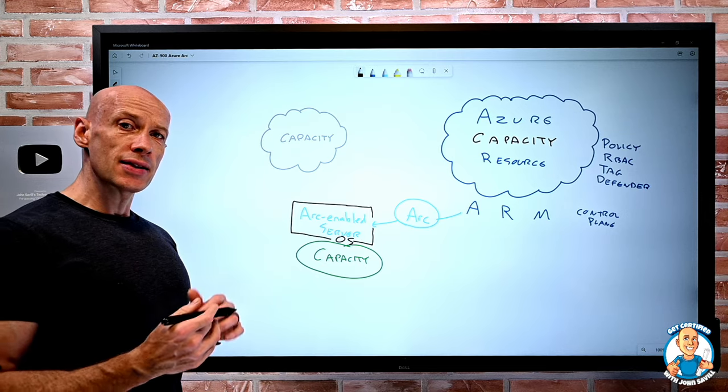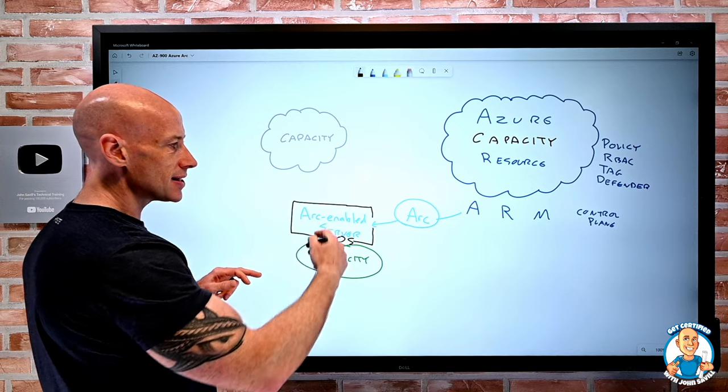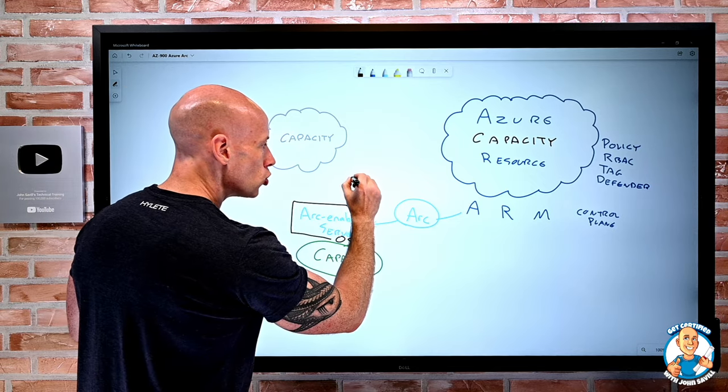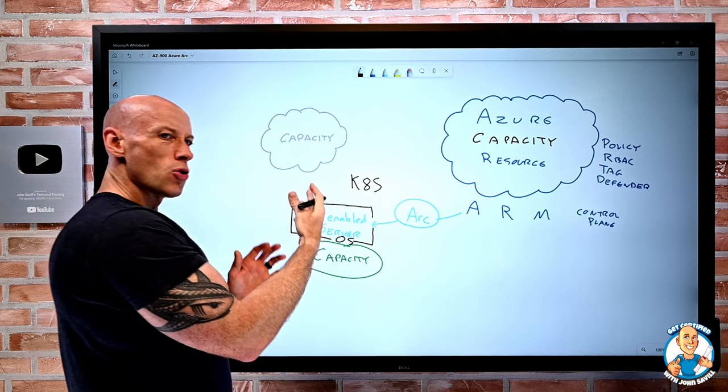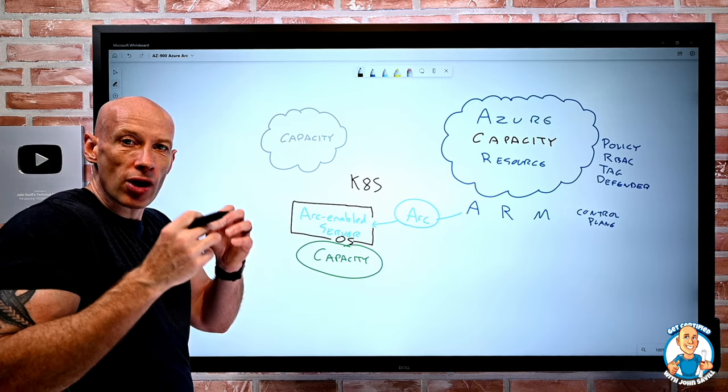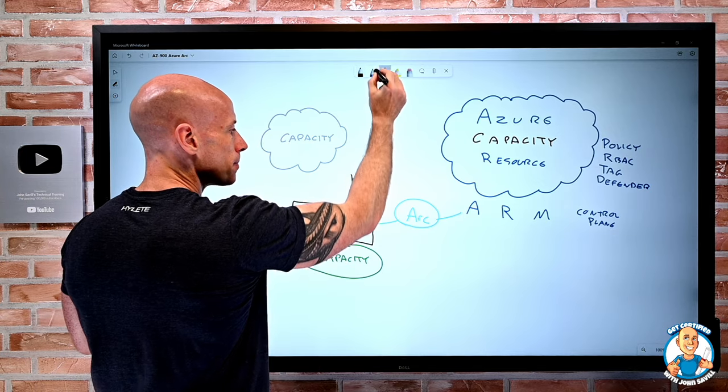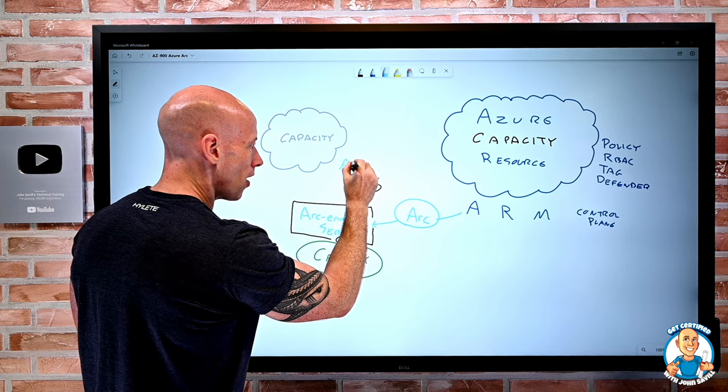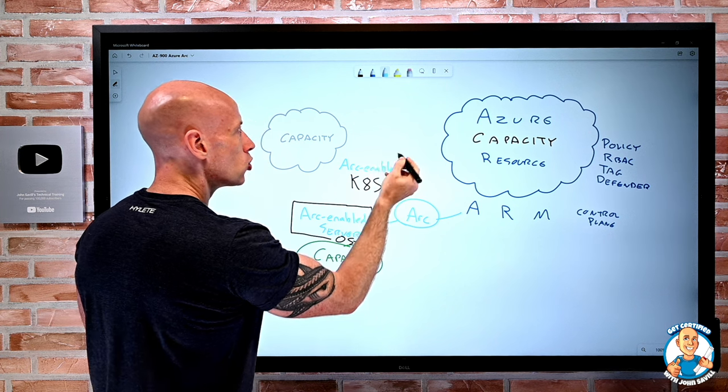But realize there's more than just operating systems. I may also have capacity, again it could be in other clouds, it could be on-premises, that's maybe Kubernetes. Kubernetes is that industry standard orchestrator for containers. I create pods that host there. So once again, there's Arc-enabled Kubernetes. So I can have Arc-enabled Kubernetes.